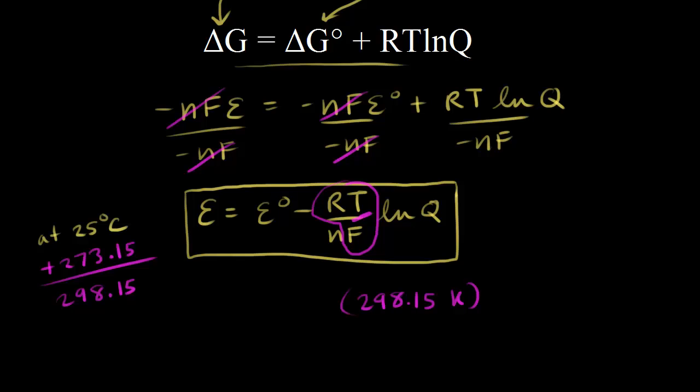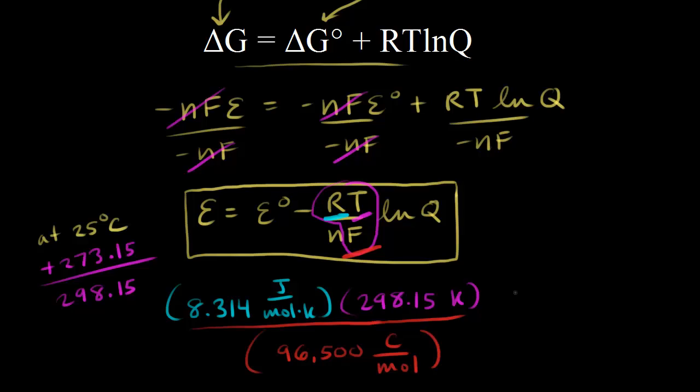R is the gas constant, so remember the gas constant is 8.314 joules over mole Kelvin. And F is Faraday's constant. Remember Faraday's constant from an earlier video, that's 96,500 coulombs per mole. Faraday's constant is the charge of one mole of electrons. Let's solve for what all this is equal to.